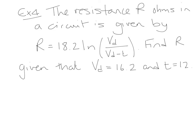The final example, example 4. The resistance R in ohms in a circuit is given by R is equal to 18.2 times ln of VD divided by VD minus T. They want us to find R given that VD is equal to 16.2 and T is equal to 12. So we're just simply substituting in those values into the equation we're given and solving.